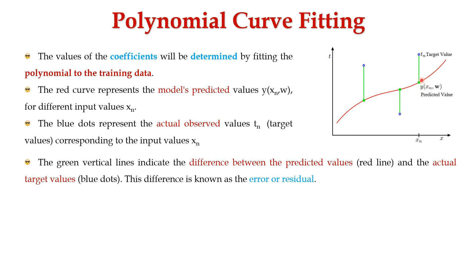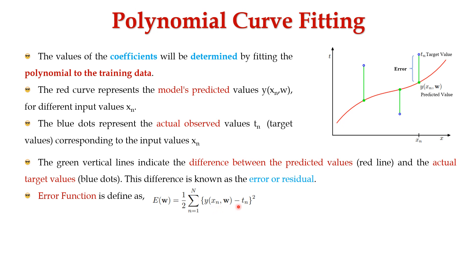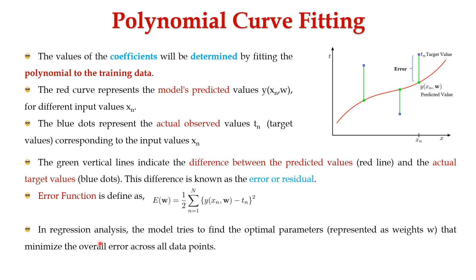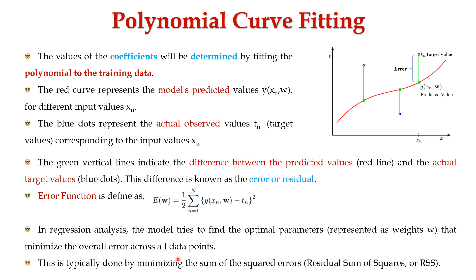The green vertical lines indicate the difference between the predictor values and the actual values. This difference is known as errors or residuals. The error function is defined as E(w) = (1/2) · summation from n=1 to N of [y(xn, w) − tn]². In regression analysis, the model tries to find the optimal parameters — represented as weight values — that minimize the overall error across the data points. This is typically done by minimizing the sum of squared errors, that is, the residual sum of squares (RSS).